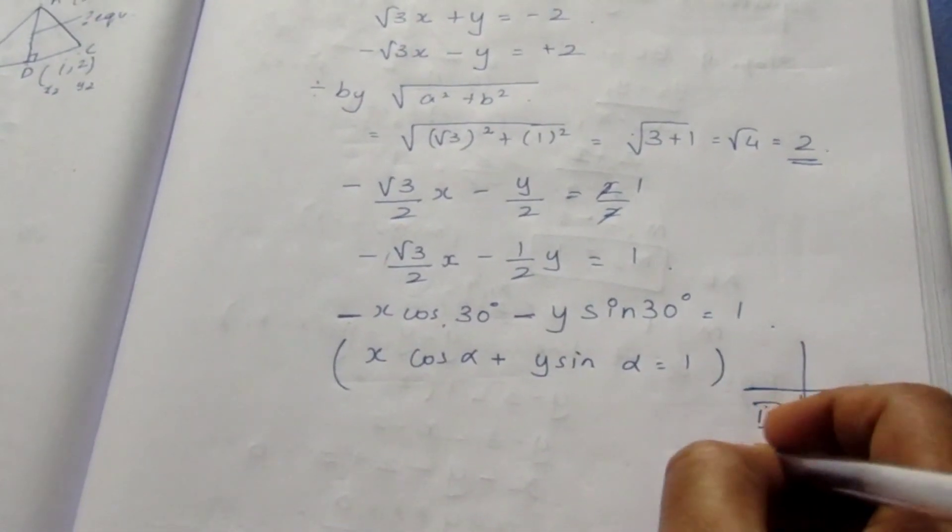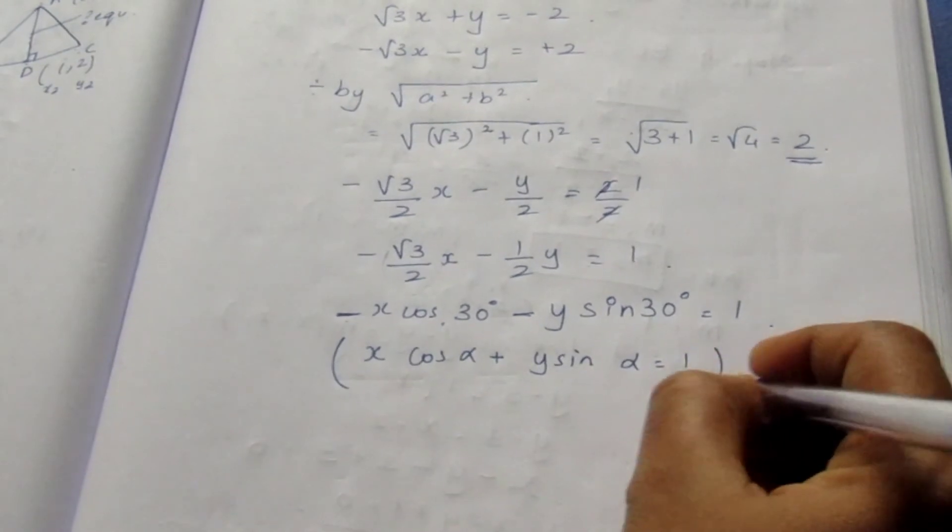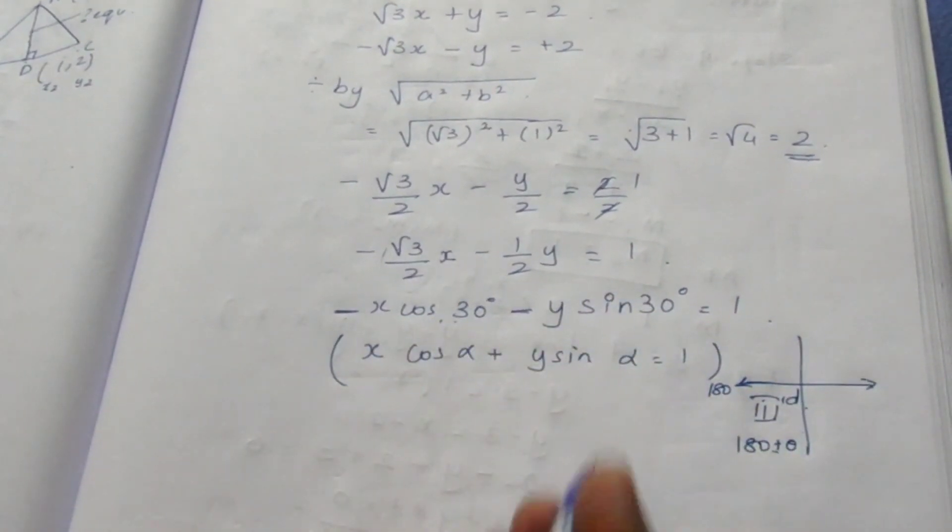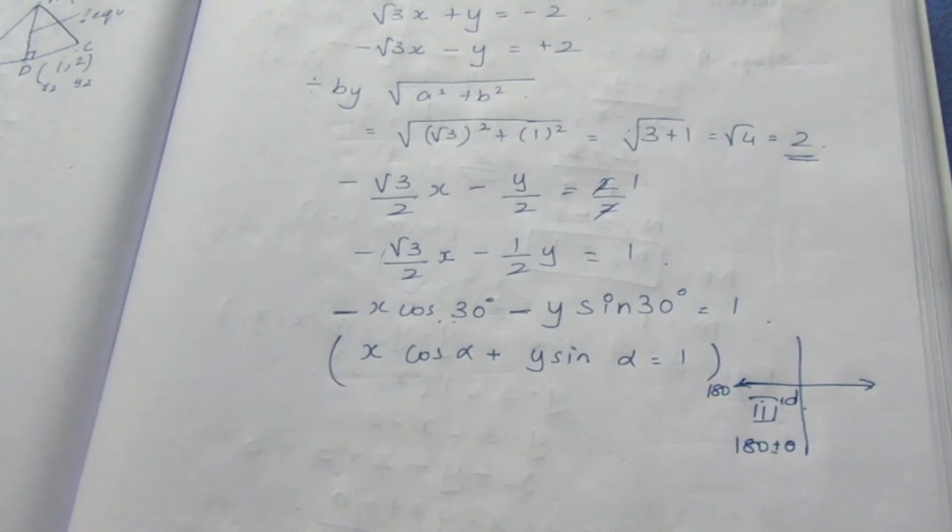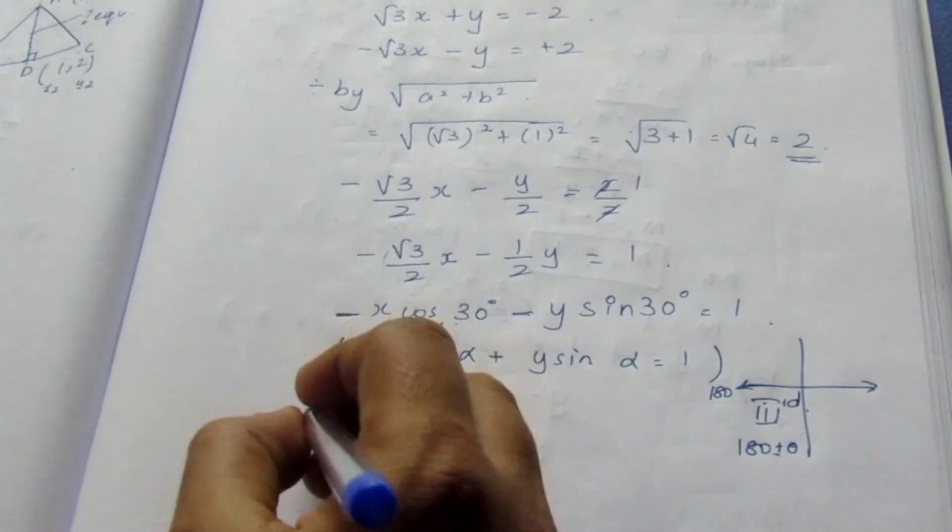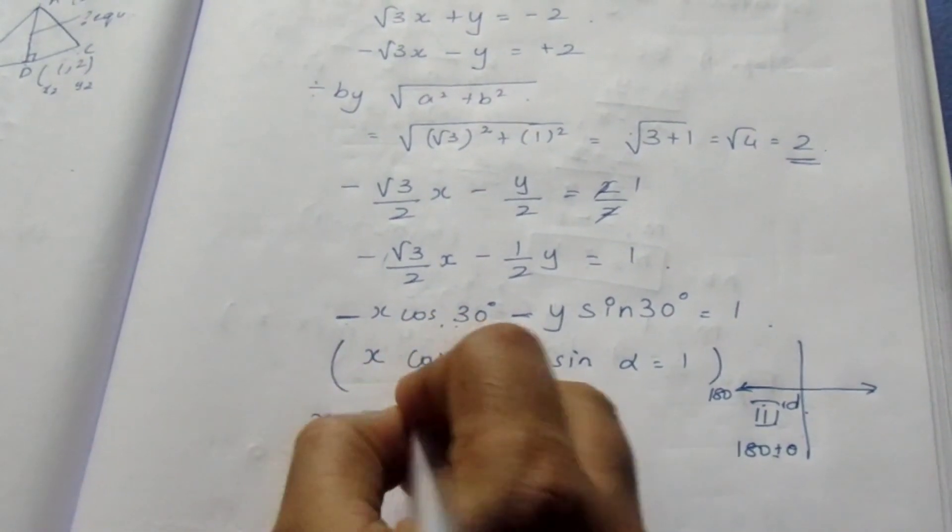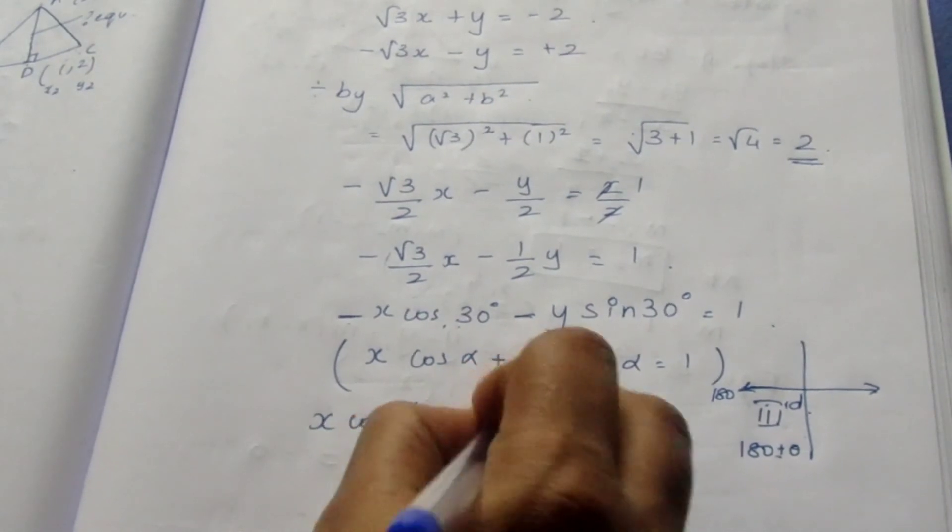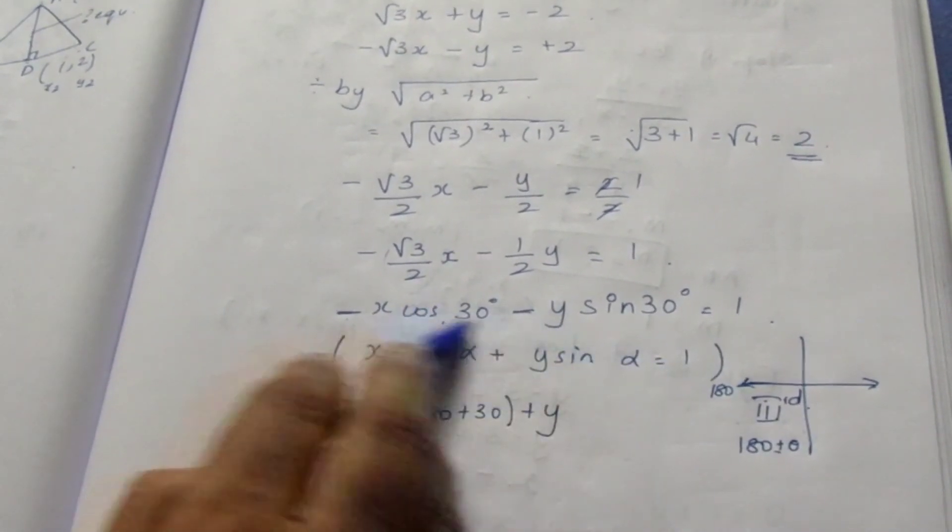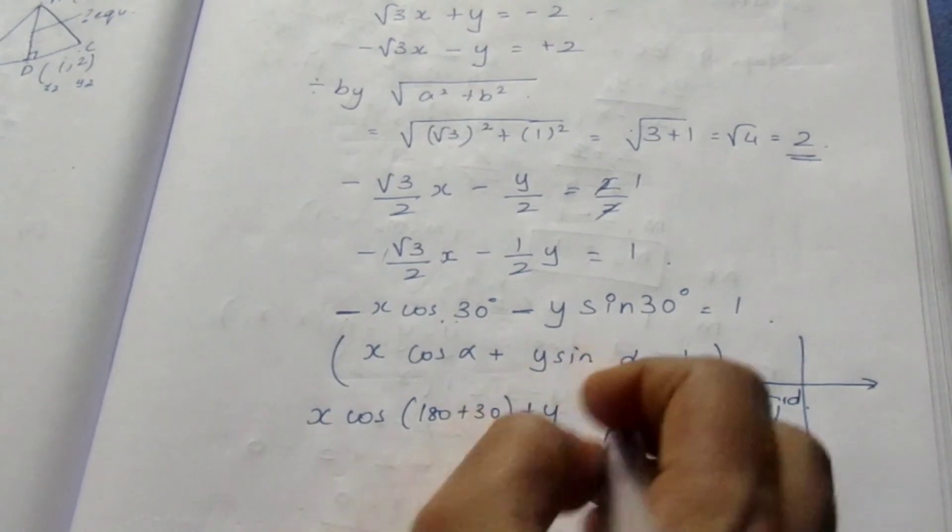In the third quadrant, we can write 180 plus theta. It is 180 plus theta. Instead of 30, we can write it to be 180 plus theta. Theta value here is 30. x cos 180 plus 30 plus, we are changing the sign because we have taken the minus sign as 180 plus theta.